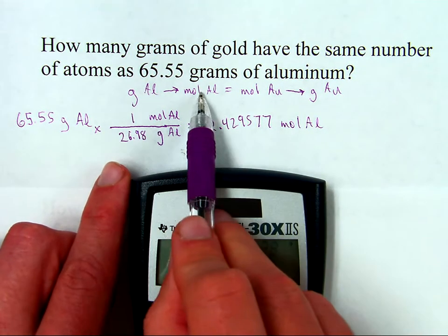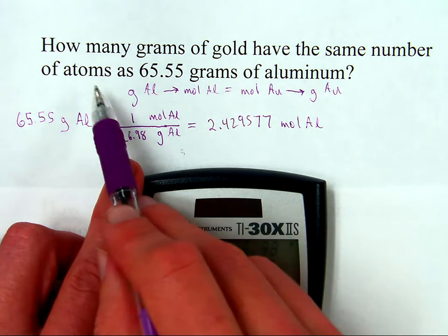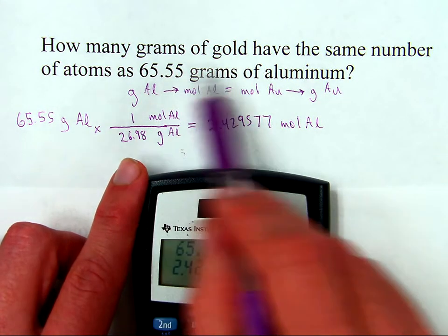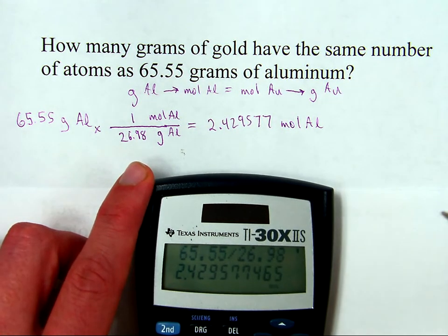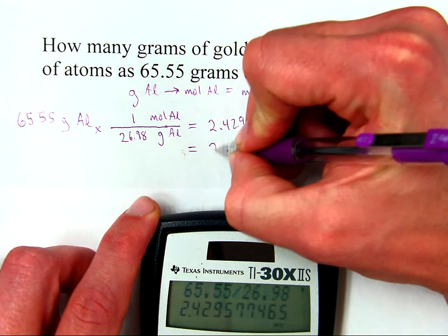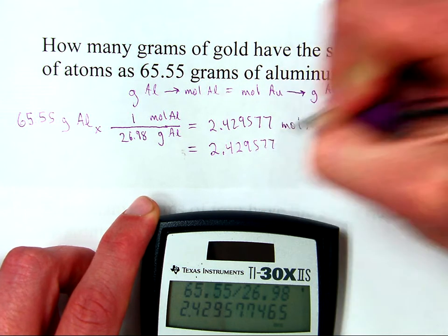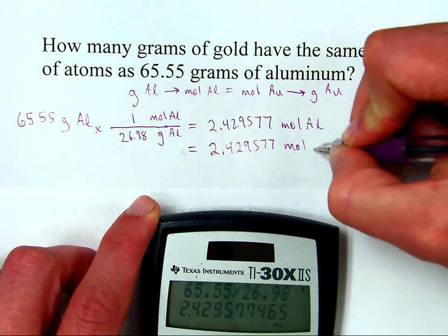Okay, at this point, I have done this. Now I'm going to make this jump. I'm going to say if they have the same number of atoms, then these two samples have the same number of moles. So I'm going to say if there's that many moles of aluminum, then there is the same number of moles, the 2.429577, moles of gold.